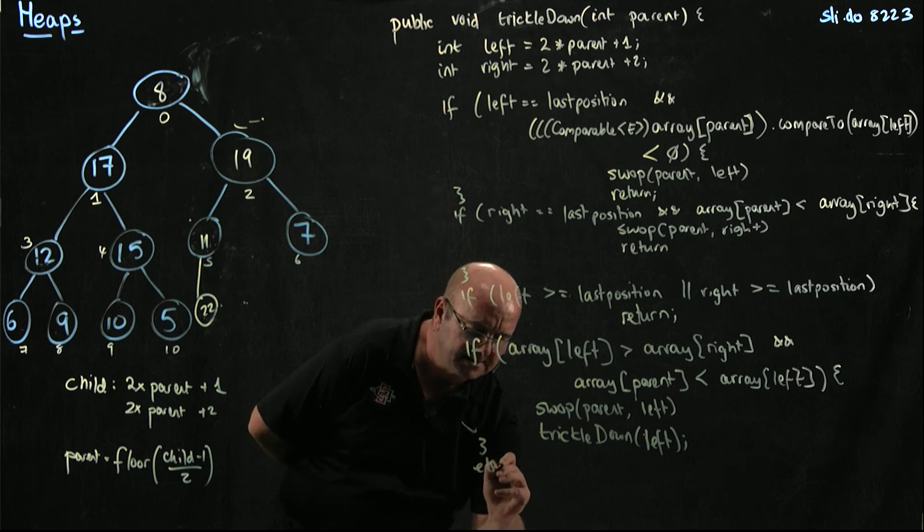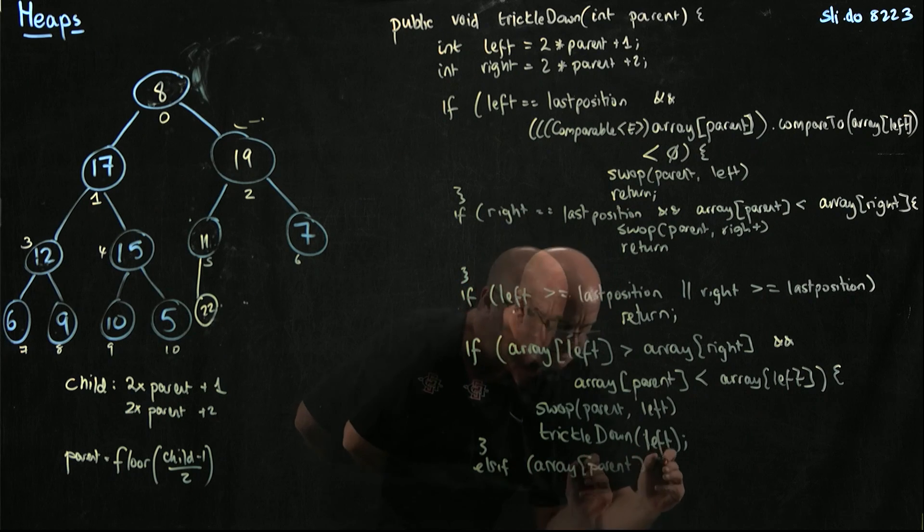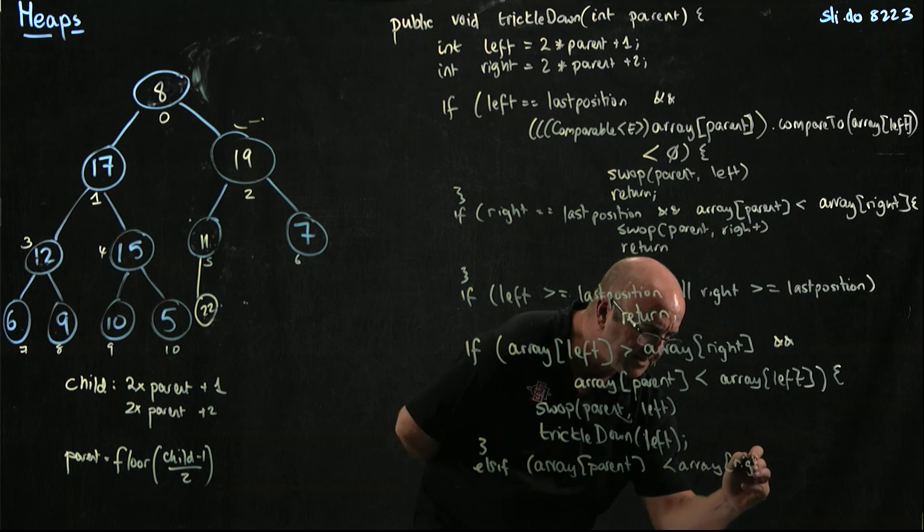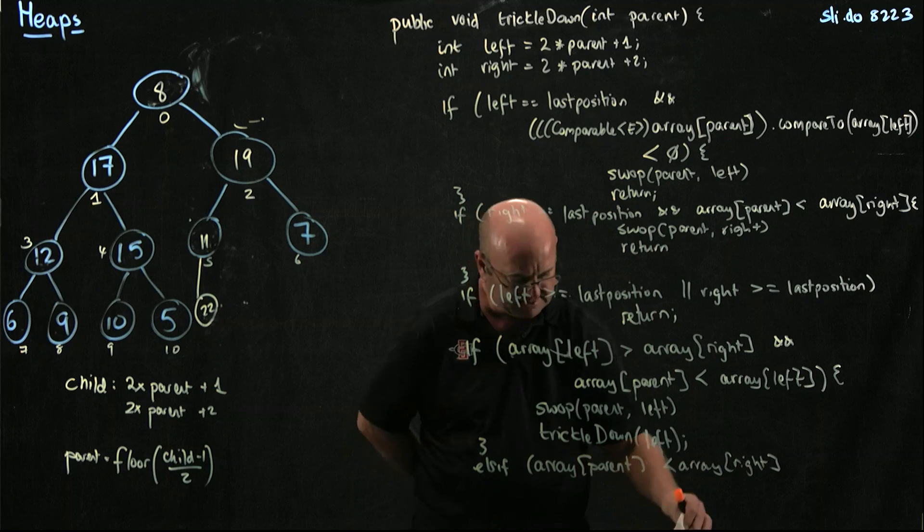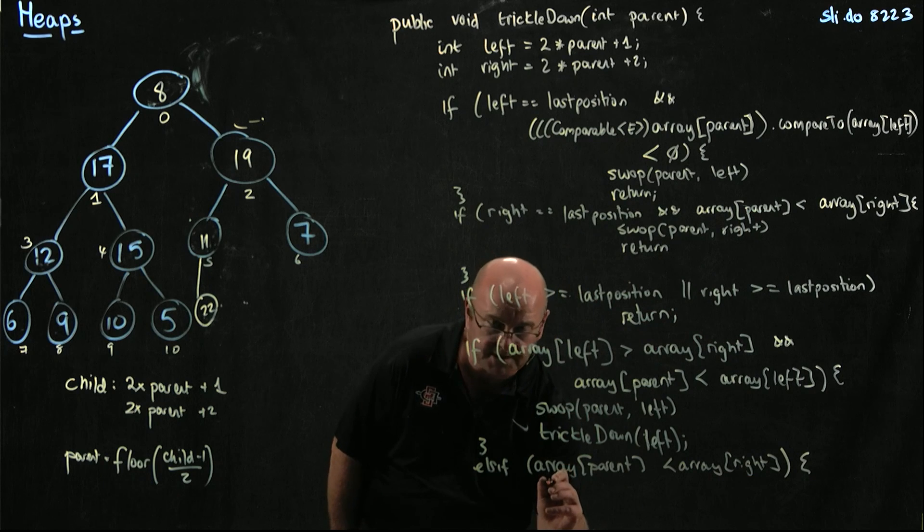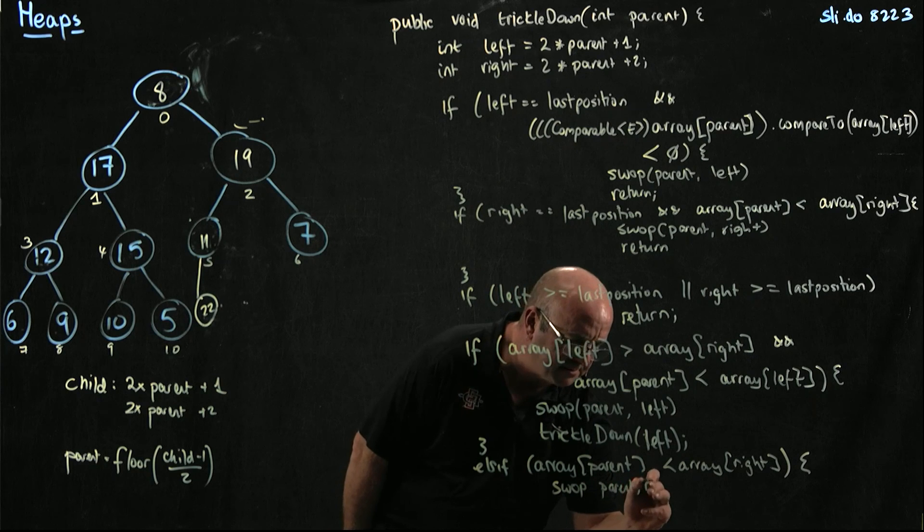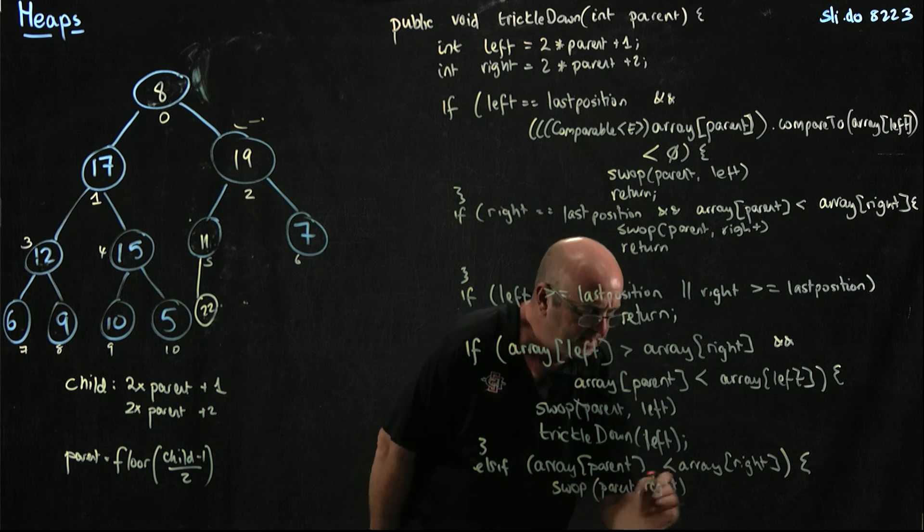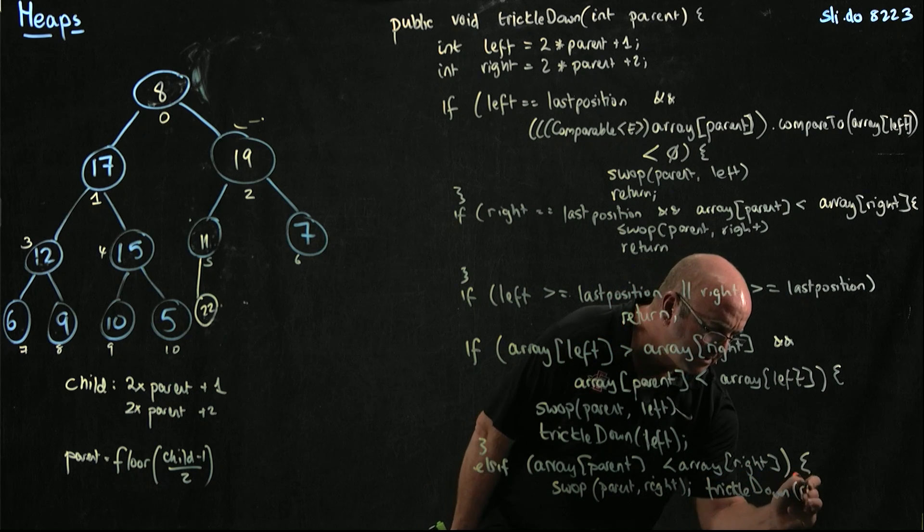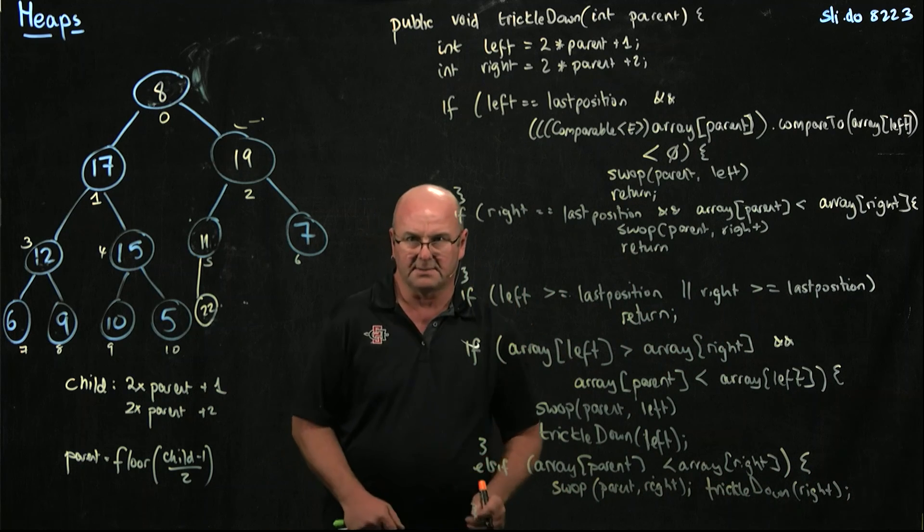Here we can use an else if array parent is less than array right. It doesn't actually matter if you have an else there. Then we're going to swap these two. So we swap parent and right. And we trickle down right. Just about made it on the screen.